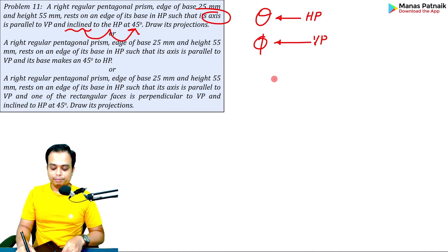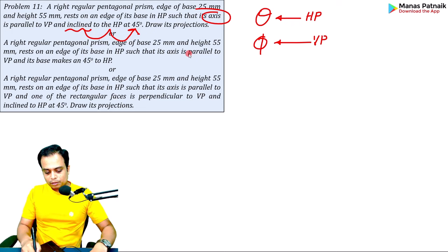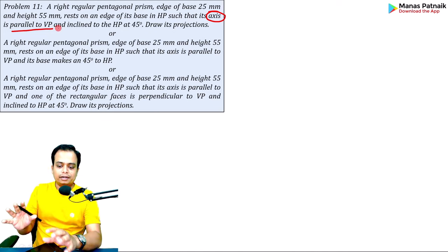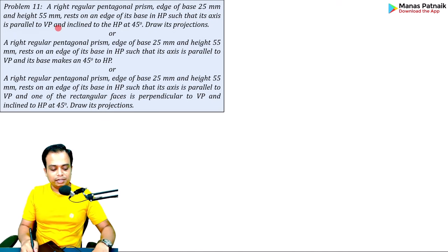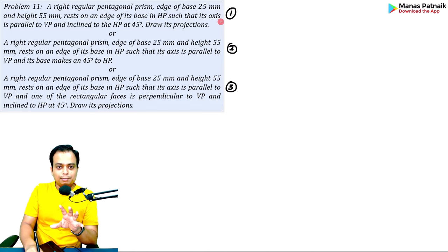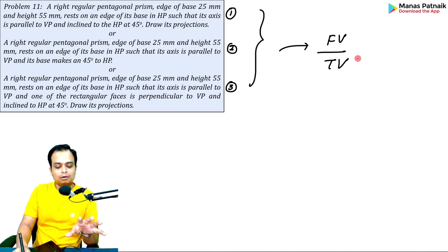We have also been given that the axis is parallel to VP. All of these conditions should reflect perfectly in your drawing. There are three versions of this problem — version one, version two, and version three. The description might be slightly different but all of them will lead you to the same front view and top view, meaning the same orthographic projection.